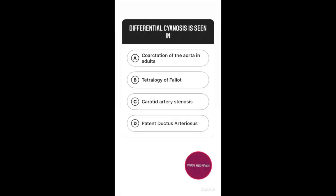Question number two. Differential cyanosis is seen in option A coarctation of the aorta in adults, option B tetralogy of fallot, option C carotid artery stenosis, option D patent ductus arteriosus. The answer to this question is patent ductus arteriosus.